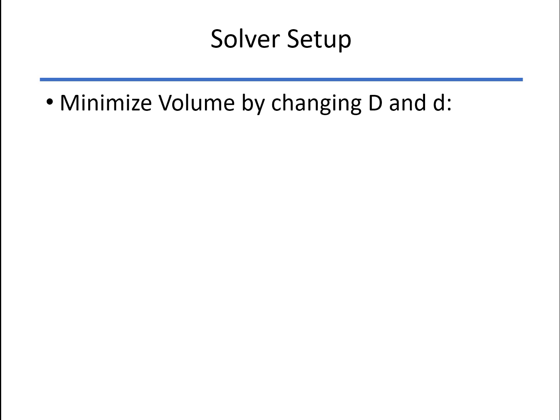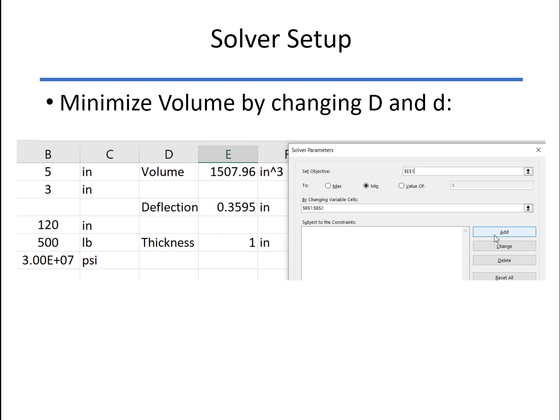And now we're ready to call up Solver. Remember what we want to do. We want to minimize the volume by changing the diameters. And so that's the first thing we do here in Solver. We set the objective function is going to be the volume, cell E1. We want to minimize that volume by changing these two variables right here in B1 and B2, the outer and the inner diameter.